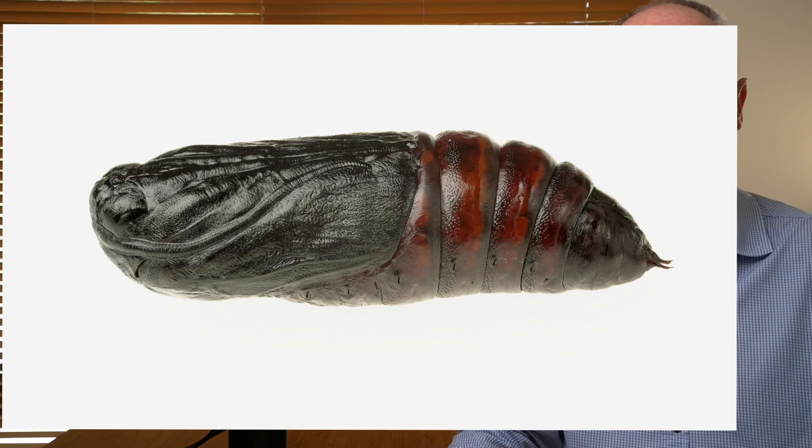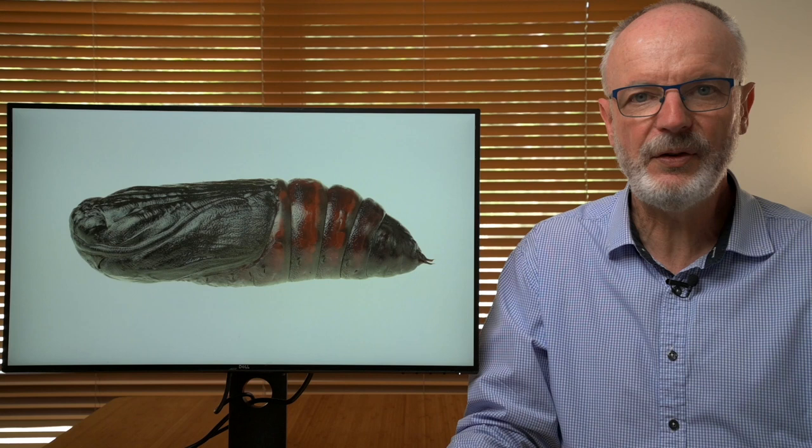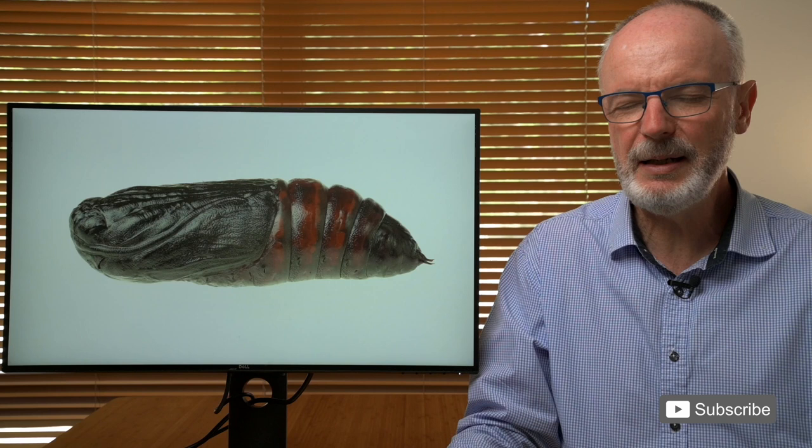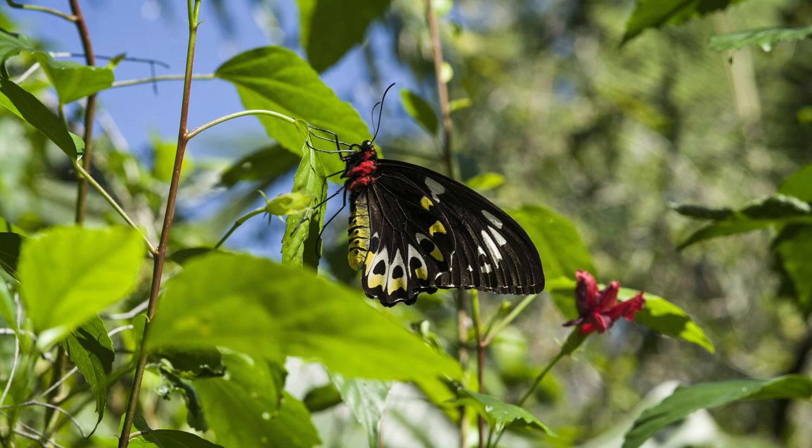Spiracles are much more difficult to see on some adult insects though. The insect might be covered in hairs or scales, or the spiracles might be hidden under wing covers or in between segments. Where do you reckon the spiracles are on this birdwing butterfly? I'll look forward to your answers in the comments below.